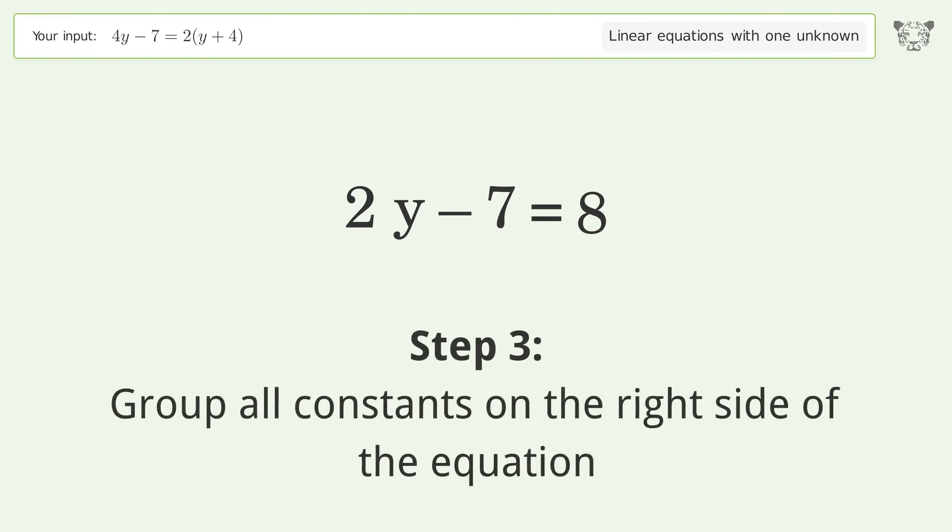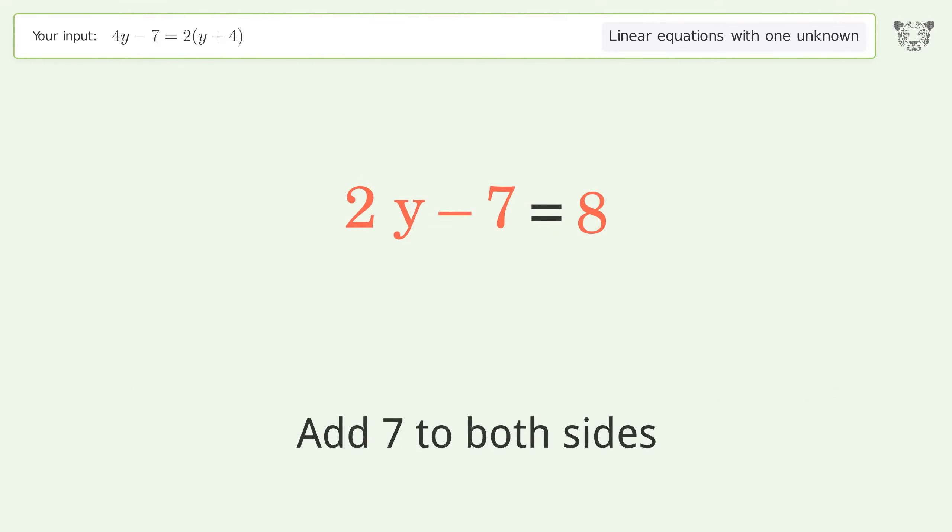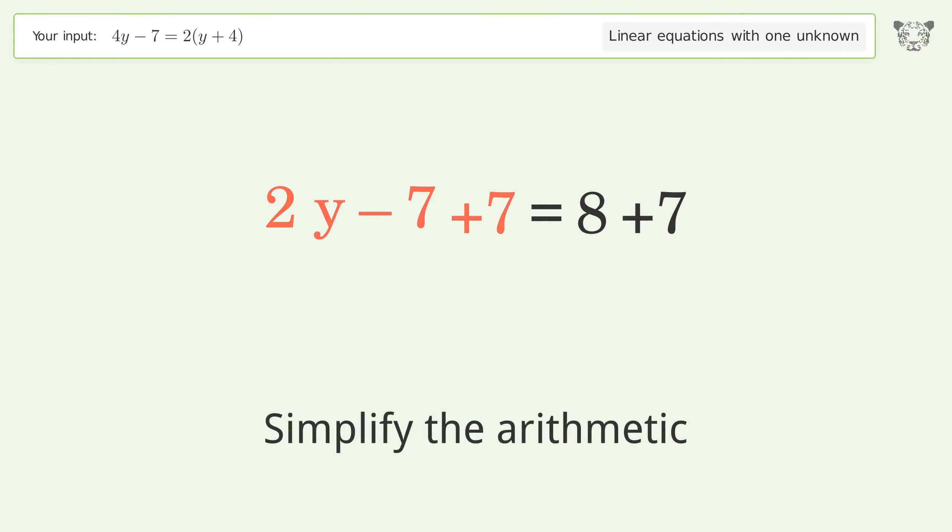Group all constants on the right side of the equation. Add 7 to both sides. Simplify the arithmetic.